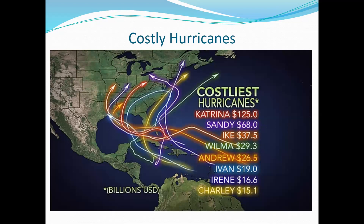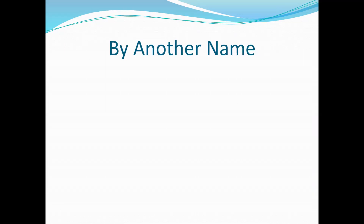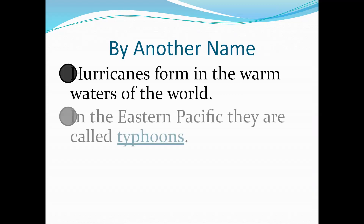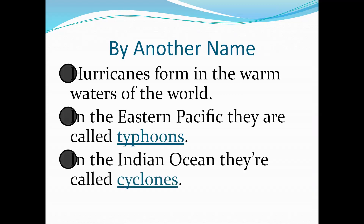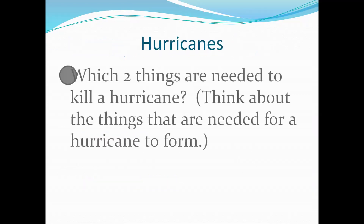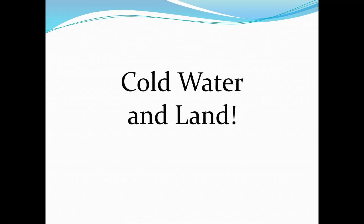Hurricanes form in all tropical oceans, but in other parts of the world they are known by different names. In the eastern Pacific, they're called typhoons, and in the Indian Ocean, they're called cyclones. Here's a question: what are the two things needed to kill a hurricane? Think about the things needed for a hurricane to form — remember those three things? If you answered cold water and land, you are correct.